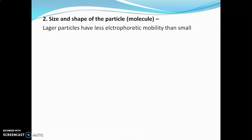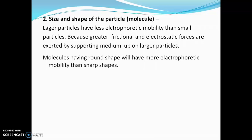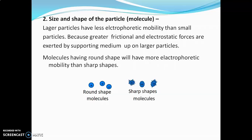Second factor is size and shape of particles. Large particles have less electrophoretic mobility than small particles, because greater frictional and electrostatic forces are exerted by the support medium on the large particles. Large particles may get stuck for some time within the support medium, and that's why the movement of larger particles will be slow as compared to the movement of small particles. The rate of migration of small particles is more than the large particles. The molecules having round shape will have more electrophoretic mobility than the sharp shapes, because the sharp shape molecules may get adhered or stuck on the support medium and their rate of migration will be slow.